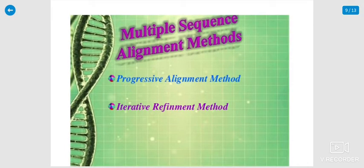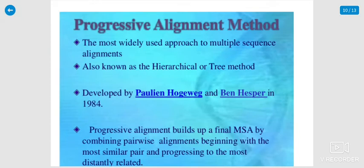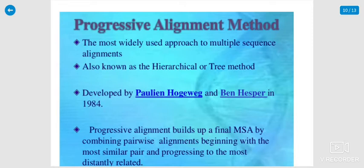The multiple sequence alignment methods: number one is the progressive alignment method; number two is the iterative refinement method. The progressive alignment method is the most widely used approach to multiple sequence alignment. It is a hierarchical or tree-based method developed by Pauling, Hegward, and Ben Hesper in 1984. Progressive alignment builds up a final MSA by combining pairwise alignments beginning with the most similar pair and propagating to the most distantly related.